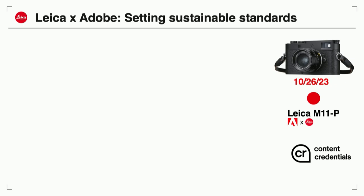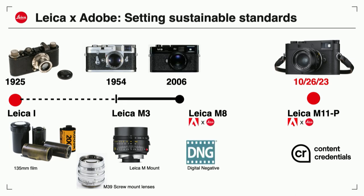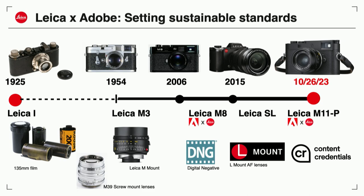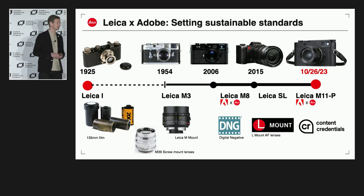We look back on a very long history of implementing standards in our cameras. Looking back even 100 years ago, in 1925 we implemented 135mm film as a standard for mobile photography. Also over the last 100 years, we have implemented lens standards like the screw mount, the M-mount, and the L-mount autofocus lens standard. It's also not the first time that we implemented something that Adobe has invented — we are very happy that we took the early decision to go for the DNG standard in the Leica M8 and before in the Leica digital module. We get very good feedback from our customers that this was the right decision, so we were very optimistic that going for a standard that Adobe is creating would be the right way to go.